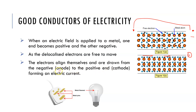The electrons align themselves with the current and are drawn from the negative end (the anode) to the positive end (the cathode) — remembering that anions are negative and cations are positive. If these were plugged in to complete a circuit, the electrons will move carrying that electrical charge through the wire, which we refer to as an electric current. This occurs with all things that conduct electricity.